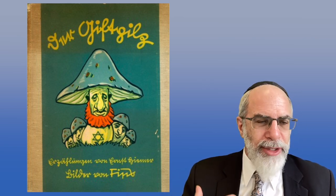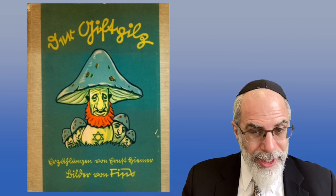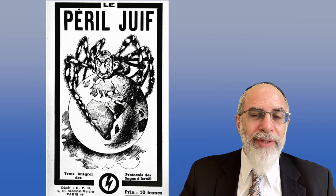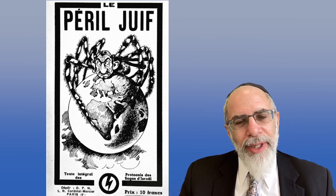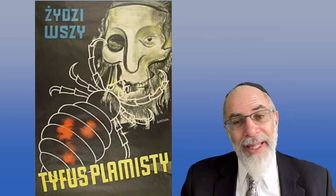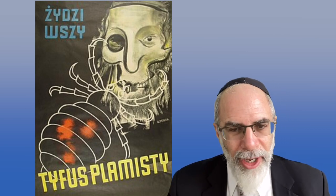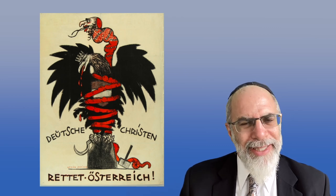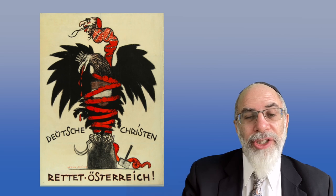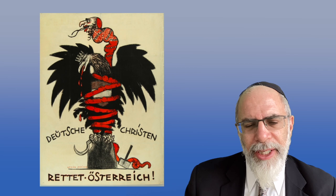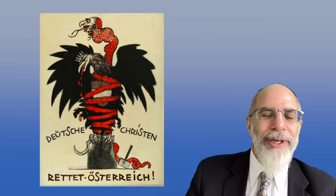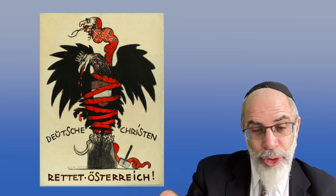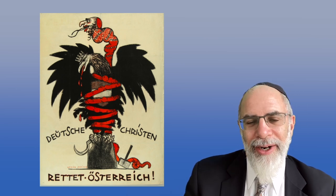The Nazis frequently referred to Jews as vermin bent on destroying the world through a global conspiracy — like this French-language Nazi propaganda showing the Jew as a vicious tarantula straddling the globe. Or here, from the Warsaw ghetto, propaganda claiming Jews carry typhus and are associated with this deadly lice-borne disease. And here's an Austrian example: from elections of the early interwar period, the Jew is portrayed as a devilish snake strangling the Austrian eagle, with the slogan Deutsche Christen rettet Österreich — German Christians, save Austria — associating Jews with communism via the hammer and sickle shown below.